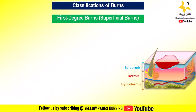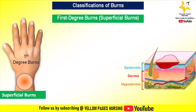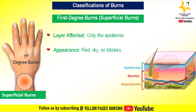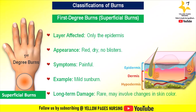Now getting into the classification of burns — let's start with first degree burns, also called superficial burns. The only layer affected is the epidermis, the outer layer. First degree burns appear red and dry without any blisters, and are painful. A common example is mild sunburn, which is a skin injury caused by overexposure to ultraviolet rays from the sun. First degree burns rarely create long-term damage and may involve only changes in skin color.